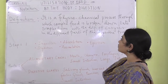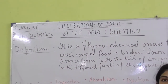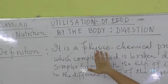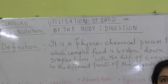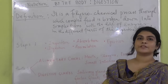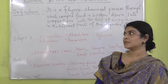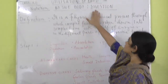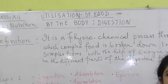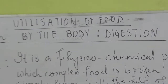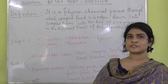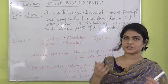Today we are going to start nutrition. We are going to do the first chapter of nutrition for class 12, that is the utilization of food by the body through the process of digestion. In this chapter we will be discussing about digestion — what it is, and what are the different parts of the digestive system and their different functions.